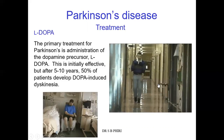The primary treatment for Parkinson's is administration of a dopamine precursor called L-DOPA. This is initially effective, but after five to ten years, 50% of patients develop DOPA-induced dyskinesia, which is a type of hyperkinetic disorder resulting from using DOPA, because it exaggerates the function of the direct pathway, bringing about hyperkinesia — called DOPA-induced dyskinesia. The main treatment is L-DOPA, sometimes followed by dopamine agonists.